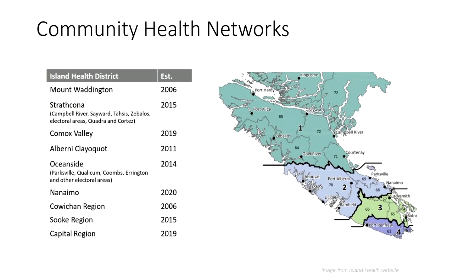The six CHNs included were Mount Waddington, Strathcona, Comox Valley, Alberni, Klaiquot, Cowichan and Souk.